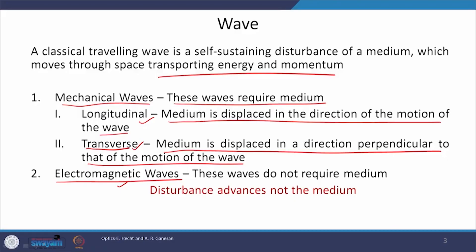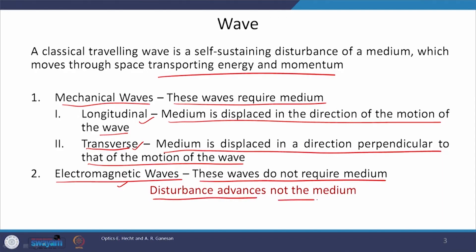Now coming to electromagnetic waves, which is what we will be studying in this course. These waves do not require any medium. Since there is no medium, the wave propagates at a very high speed. The speed of electromagnetic waves is represented by C, and its value in vacuum is 3 × 10⁸ meters per second.